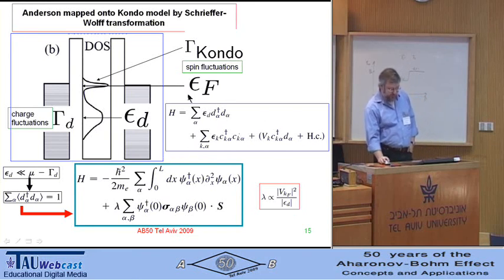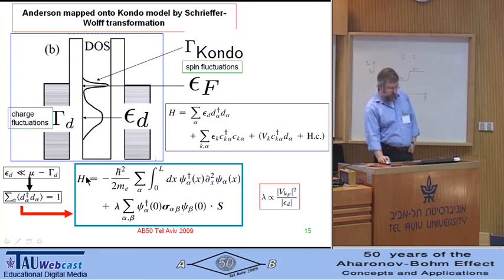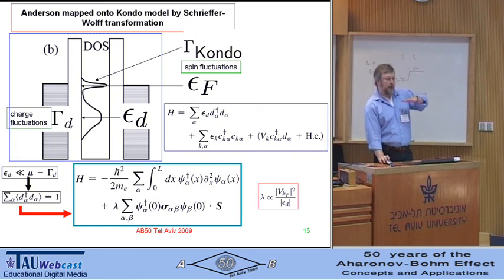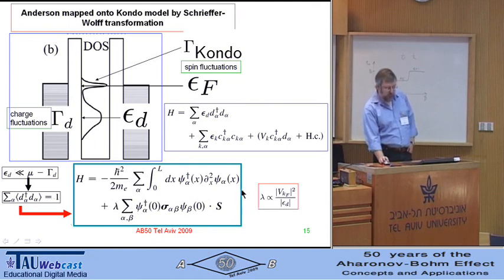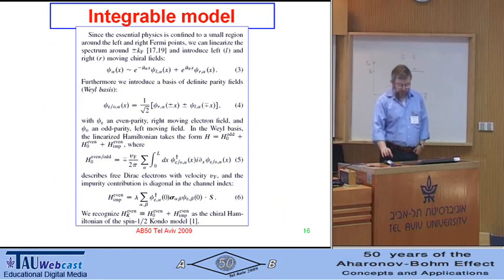We start from the Anderson Hamiltonian but then map it onto a Kondo model by a Schrieffer-Wolf transformation. We have a Hamiltonian in real space, valid in the regime where the level of the magnetic impurity is occupied by one electron — as needed for seeing the Kondo effect. This Hamiltonian has to be further massaged to get a truly integrable model. In several steps we can make it integrable: first, the essential physics is confined to a small region around the left and right Fermi points, so we can linearize the spectrum — going from a non-relativistic to a relativistic Hamiltonian.